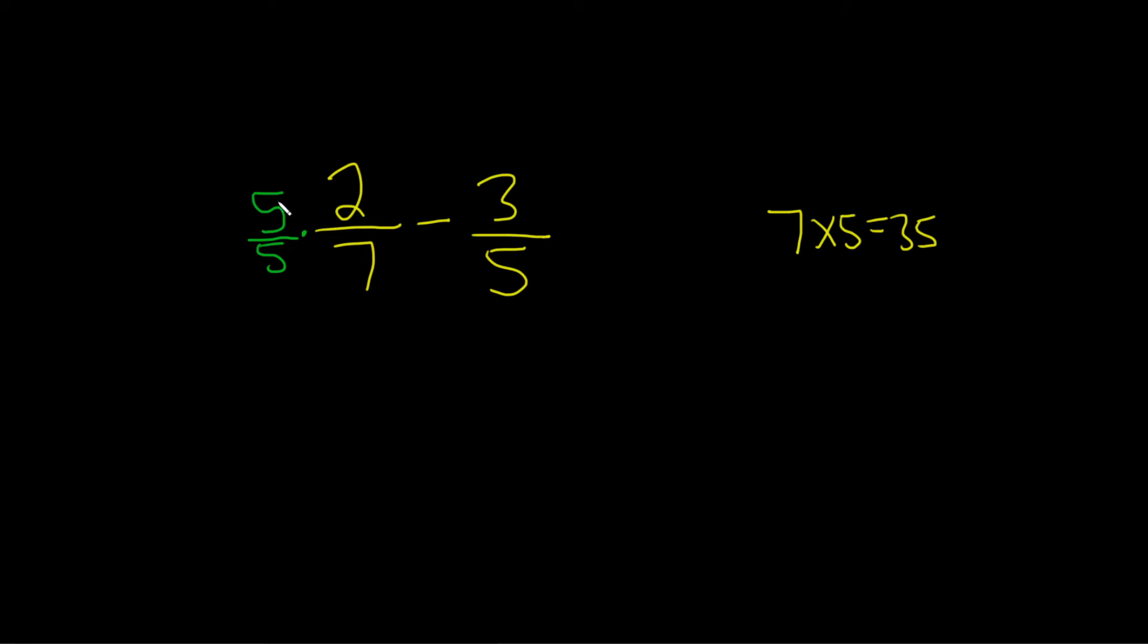Then you can do the multiplication. 5 times 2 is 10. 5 times 7 is 35.